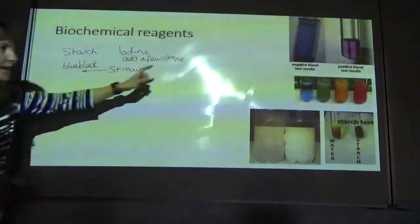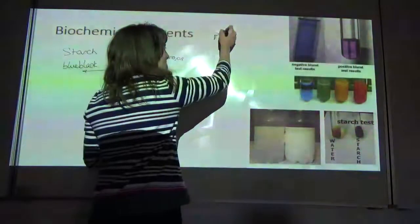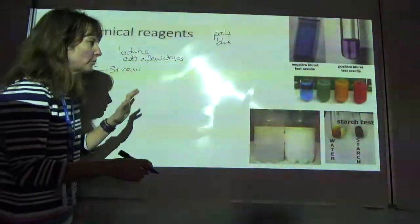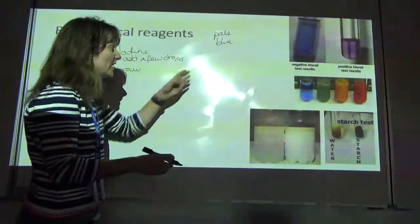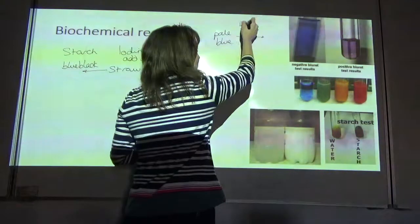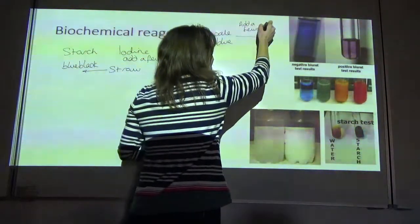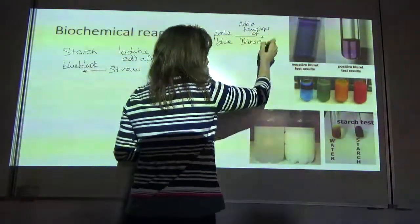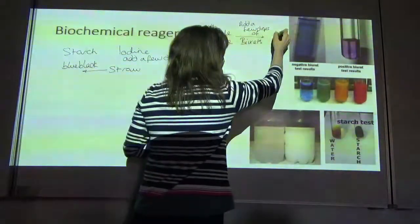The next one is the biuret. The biuret is normally pale blue. So if you were testing a chemical and the protein wasn't present, then it would stay pale blue. But if protein was present, so you just add a few drops of biuret, notice the spelling, then you get a lilac color.